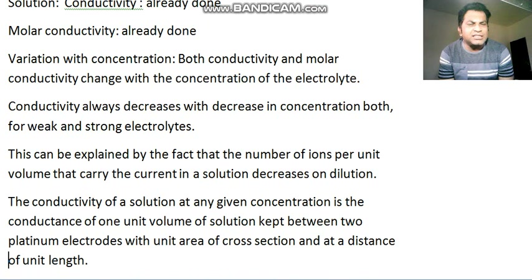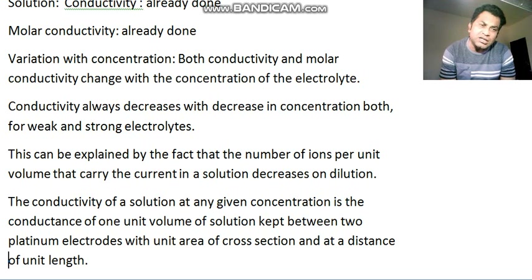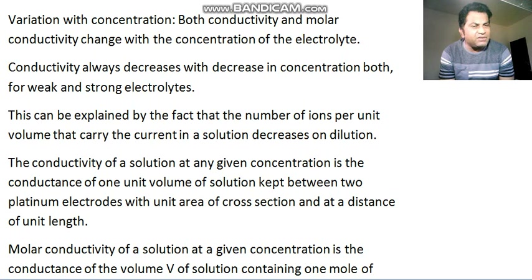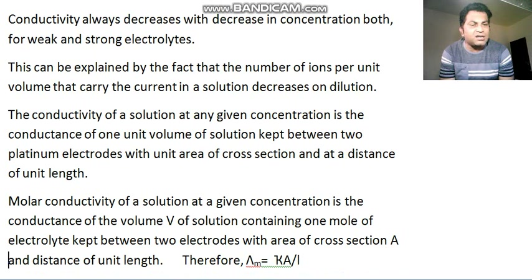Third point: this can be explained by the fact that the number of ions per unit volume that carry the current in a solution decreases on dilution. Because conductivity is carried by ions, if you dilute it, the concentration decreases, ions decrease, and therefore conductivity decreases. The conductivity of a solution at any given concentration is the conductance of unit volume of solution kept between two platinum electrodes with unit area of cross section and at a distance of unit length.